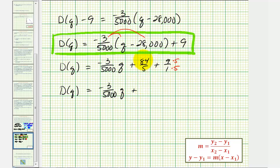So we have D(q) equals negative 3 divided by 5,000 times q, and this would be plus 84 fifths, plus 45 fifths, which would be 129 fifths.